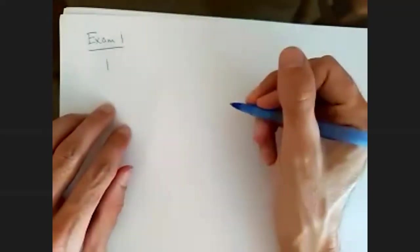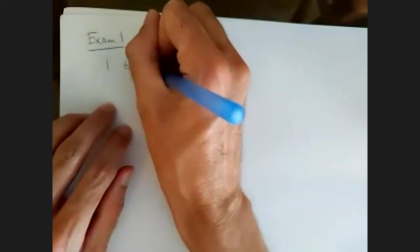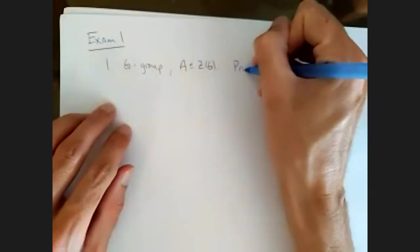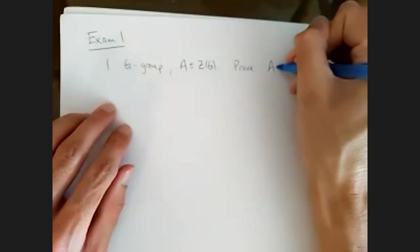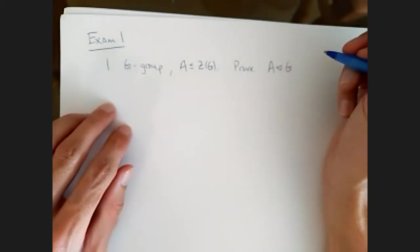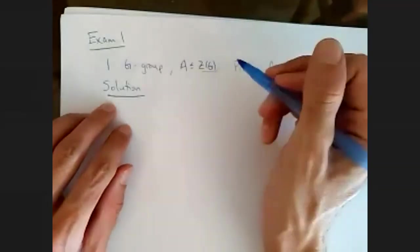So the first question: G is a group and A is a subgroup of the center of G. We're supposed to prove it is a normal subgroup of G. So mostly, this is just to remember what is the definition of a normal subgroup and what is the definition of the center.